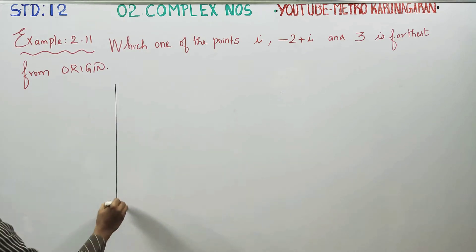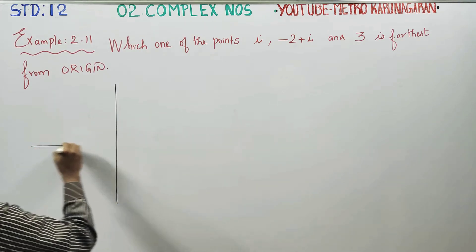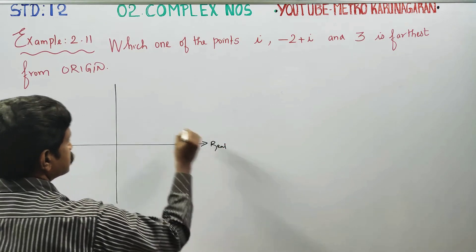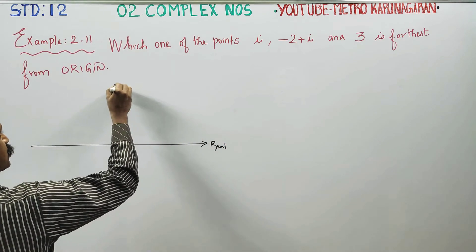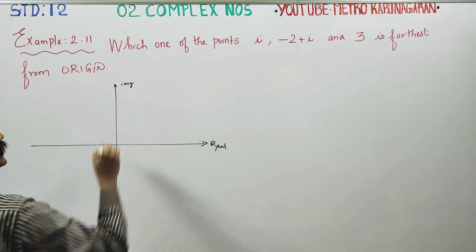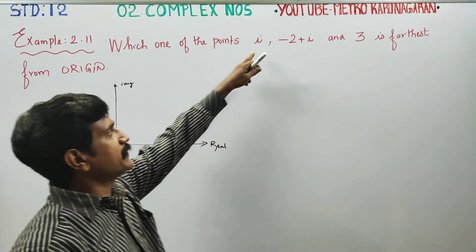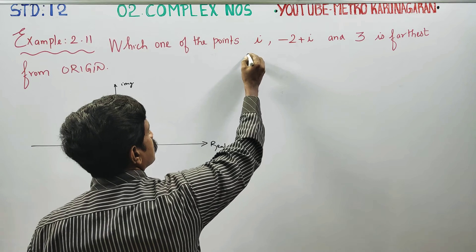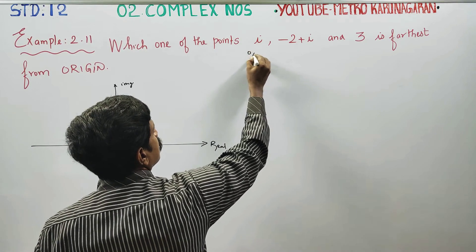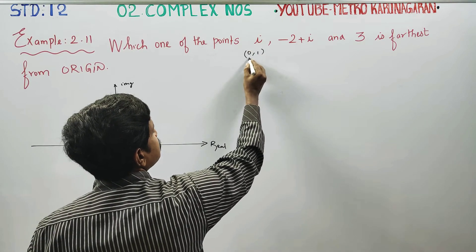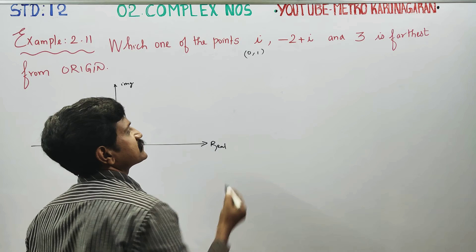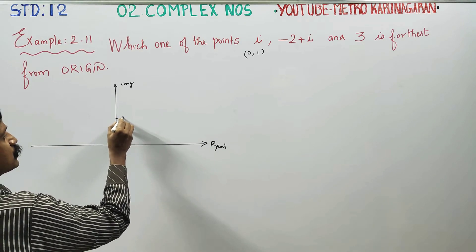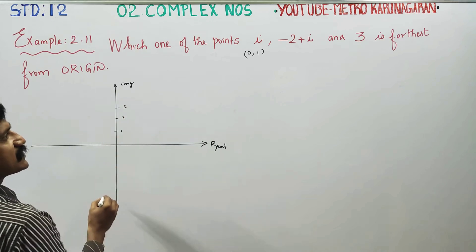First of all, I am going to an Argand diagram. This is my real axis and this is my imaginary axis. This is the x-axis, this is the y-axis. The markings are 1, 2, 3 on the imaginary axis.